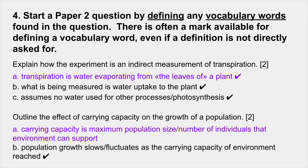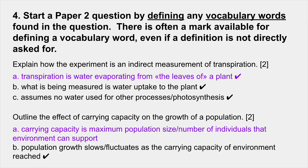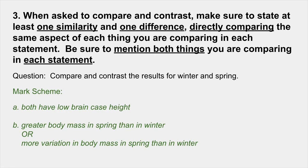Number 4: start a Paper 2 question by defining any vocabulary words found in the question. There is often a mark available for defining a vocabulary word even if a definition is not directly asked for. For example, 'explain how the experiment is an indirect measurement of transpiration' — the first mark is a definition of transpiration, even though they never ask you to define it. Similarly, 'outline the effect of carrying capacity on the growth of a population' — the first mark is defining carrying capacity.